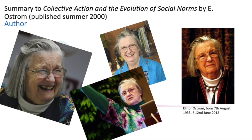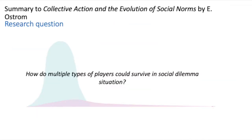One of her main publications was 'Collective Action and the Evolution of Social Norms,' where she gives really interesting insights into how multiple types of people act in a social dilemma. The central question in her publication was: how can multiple types of players survive in a social dilemma situation?